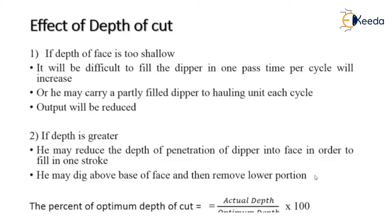The effect of depth of cut on output: if the depth of the face is too shallow, the power shovel will be in a difficult position and the dipper won't be filled in one pass cycle. The time per cycle is the time required to excavate, fill, and dump the earth into the loader. If depth is too shallow, cycle time increases, or the operator may carry a partly filled dipper, reducing output.